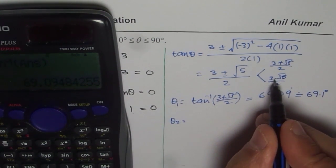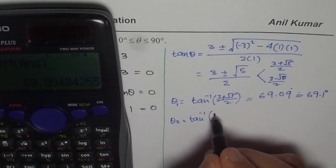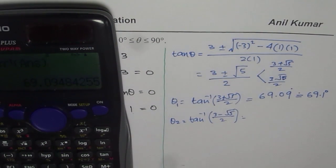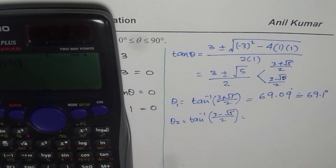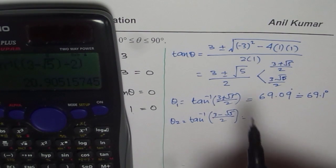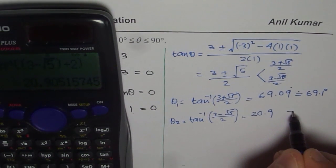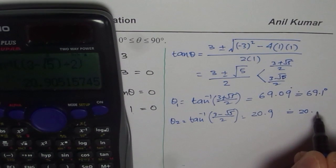The other value of θ will be with this. So we get tan inverse of 3 minus square root 5 over 2. So let us do that now. We will do shift tan inverse, and within brackets we have to write the numerator and denominator. So we will use one more bracket. 3 minus square root 5, and we will close this bracket and then divide by 2 and close another bracket to find the answer. That gives us 20.9 degrees.